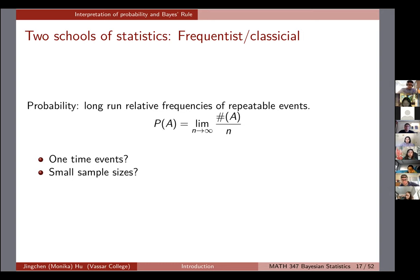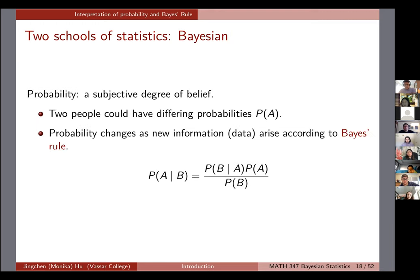Bayesian methods are one way around that limitation. From the Bayesian perspective, probability is more of a subjective degree of belief. Two people can assign different probabilities to the same event A — one might think 30% chance of heads, another 50%, another 80%. More importantly, your probability belief about a certain event or hypothesis changes as new information or data arise, according to Bayes' rule.